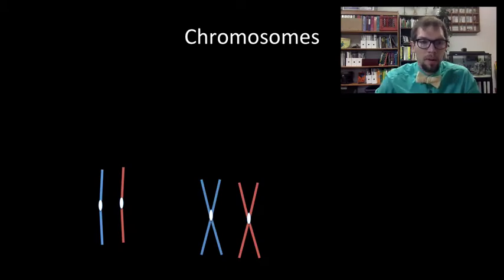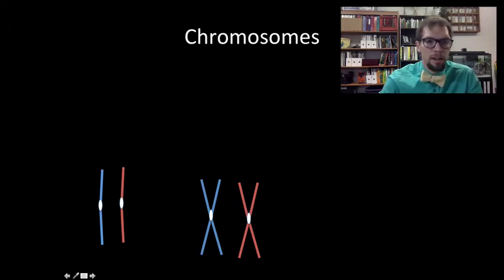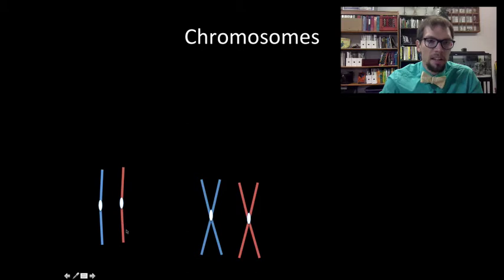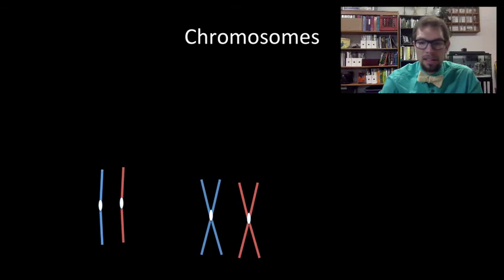To get ourselves reacquainted with chromosomes, let's review their structure. Each chromosome is made up of two double strands of DNA. Over here on this side we have a pair of chromosomes — these are homologous chromosomes, meaning they have the same genes on them, but they might not have the identical versions of those genes. They may have different alleles, but the same genes are present on both.